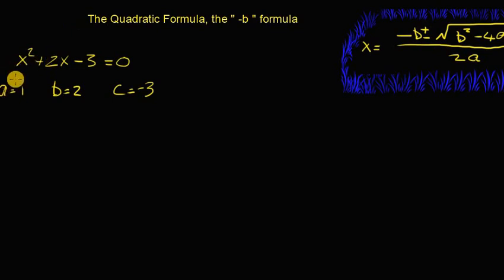In this case, a is equal to 1 because it's the number before the x squared. The b is 2, and the c is minus 3. So if we get our calculator up, we'll have a look at this.